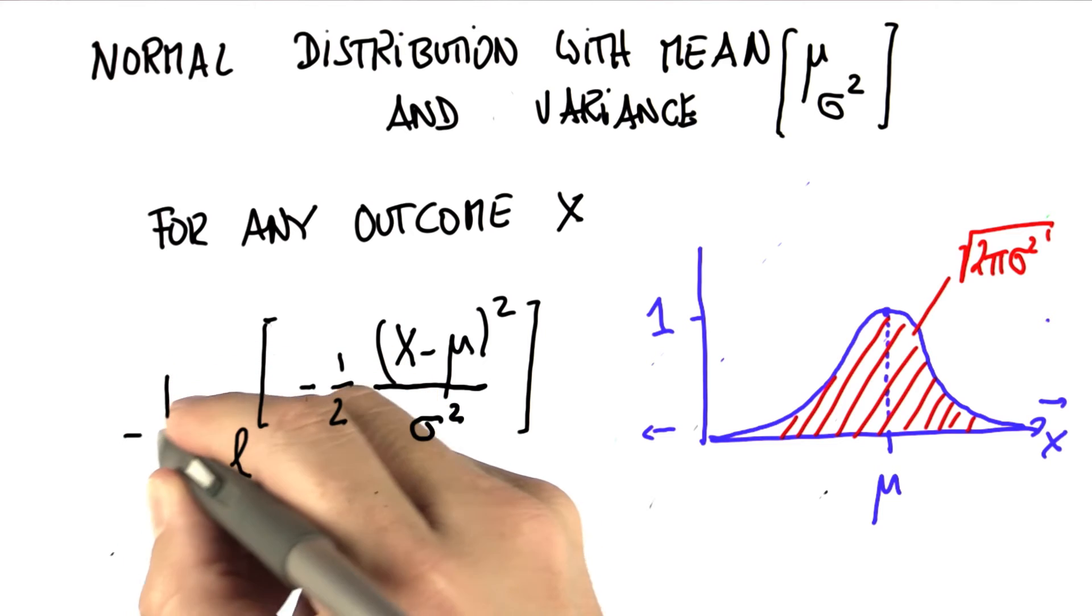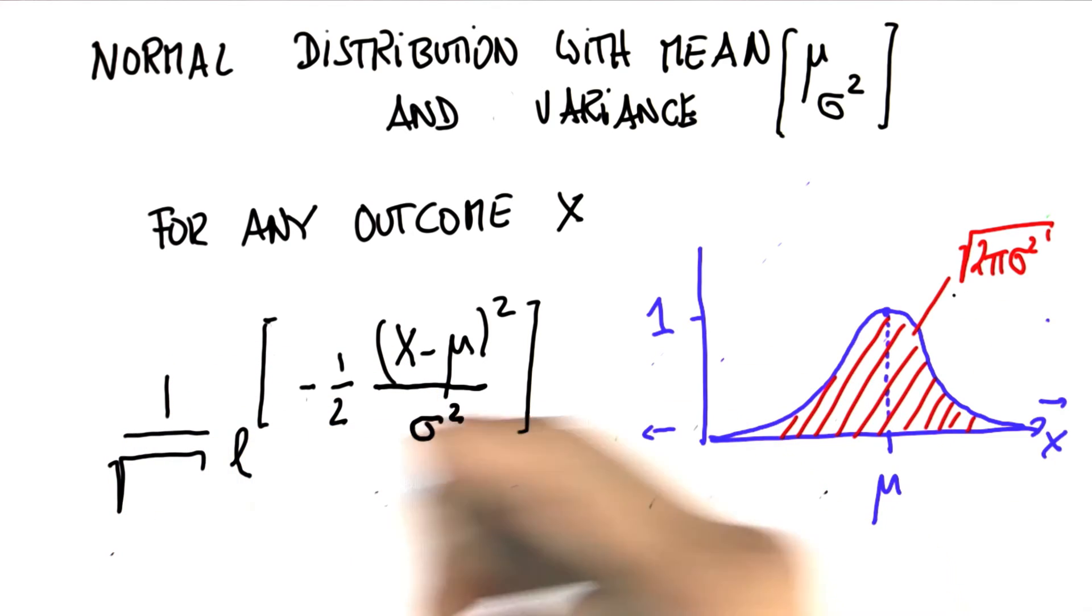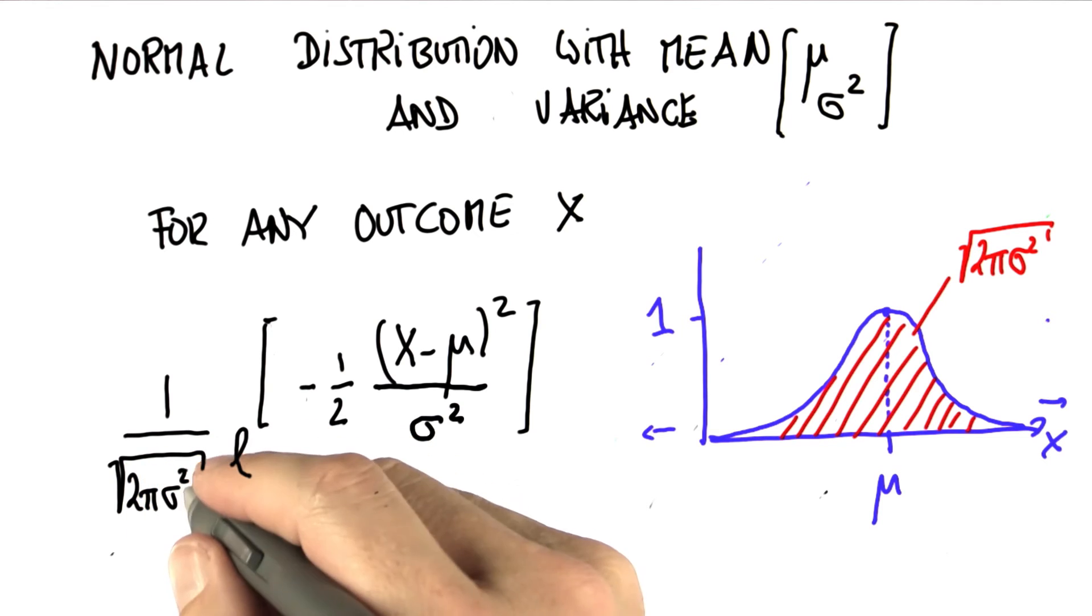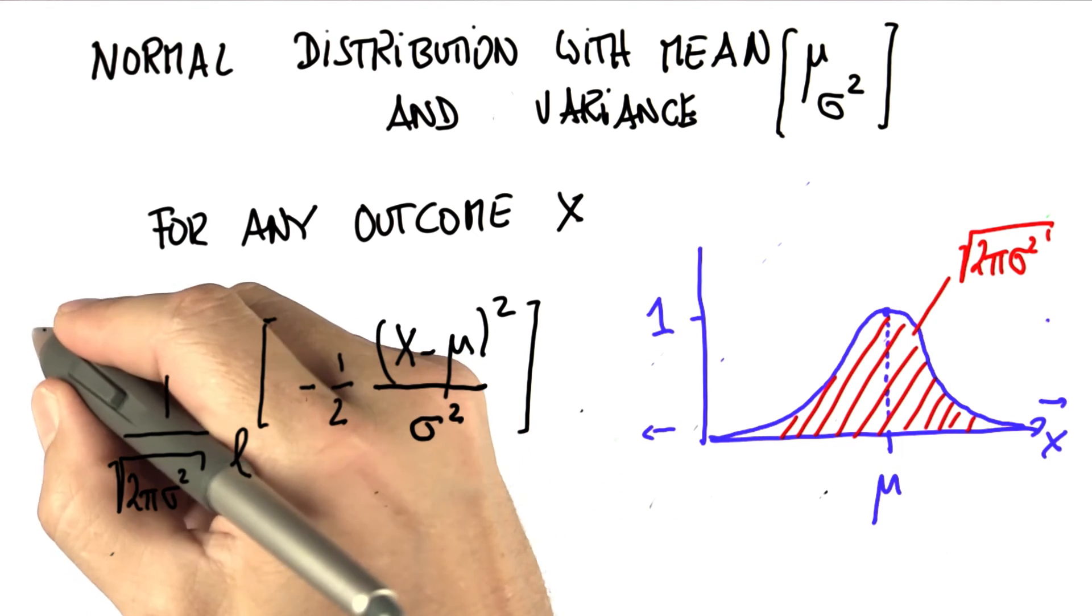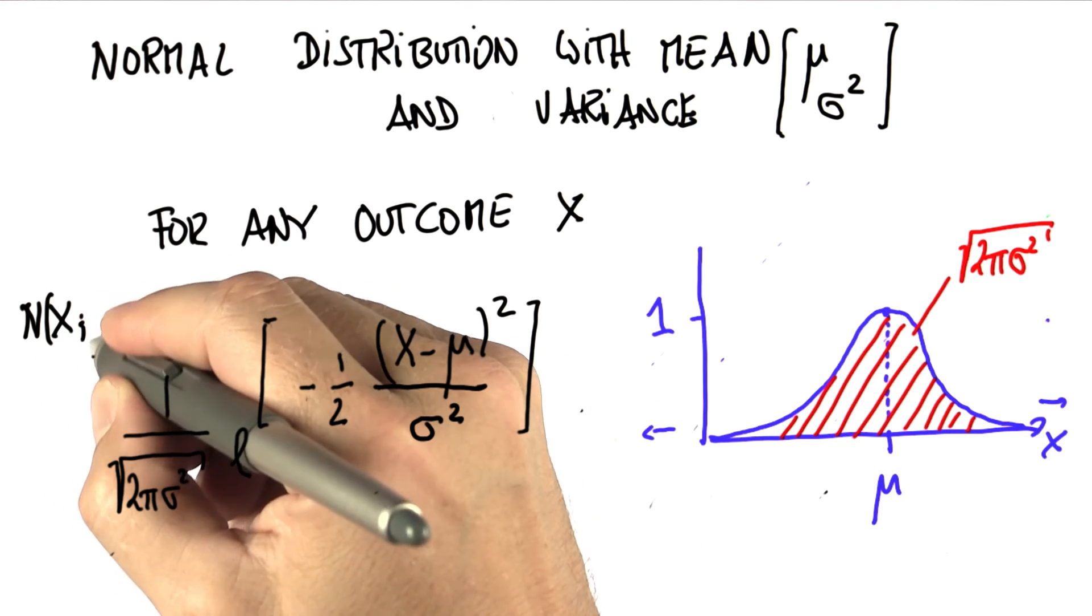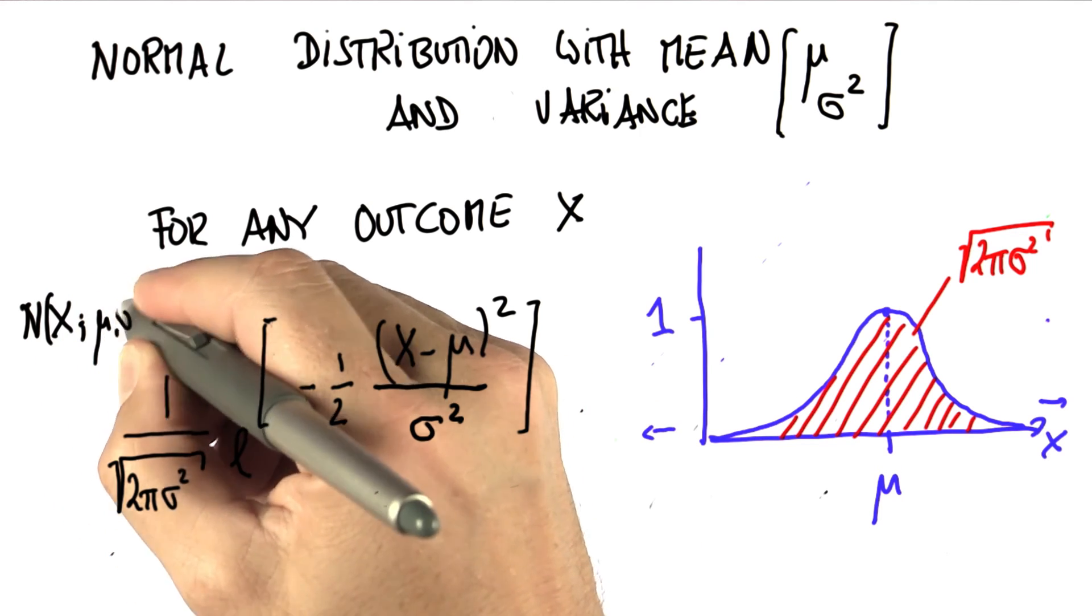So the true normal distribution is normalized by just the inverse of this thing over here, 1 over 2 pi sigma square. So 1 over square root of 2 pi sigma square. So that is the normal distribution of any value x indexed by the parameter mu and sigma square.